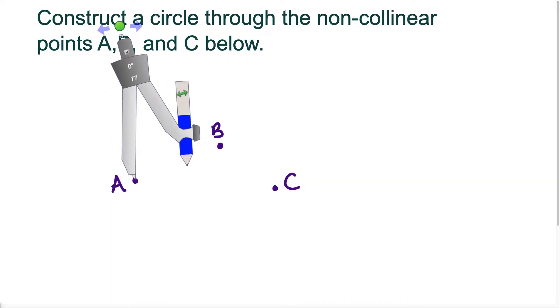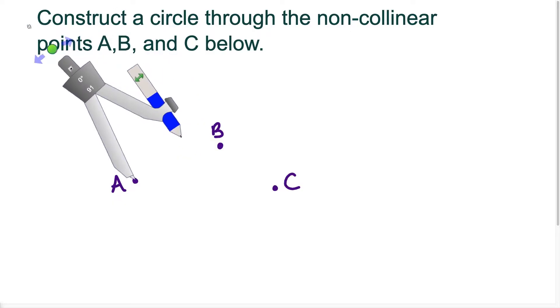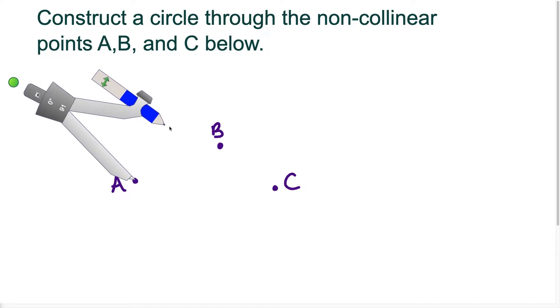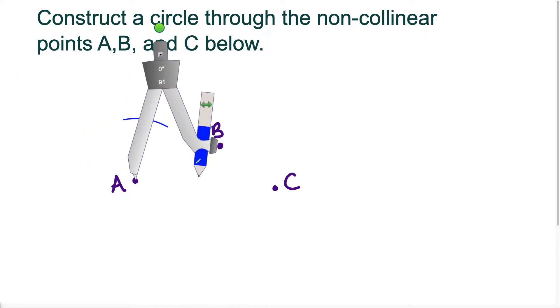So what I have to do is I have to construct the perpendicular bisector of AB and BC. So this takes a little bit, but I extend the compass to more than halfway from A to B and I'm going to swing an arc like this above. And then I move it over here and I swing the arc below.